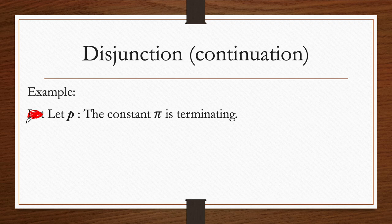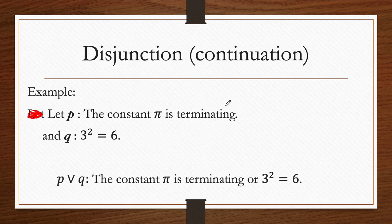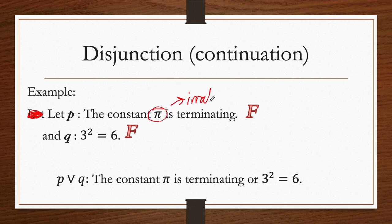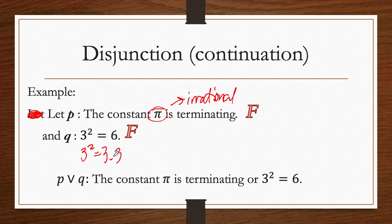For another disjunction example, let P be 'the constant pi is terminating' and Q be '3 squared is 6.' The disjunction reads: 'Pi is terminating or 3 squared is 6.' Both are false — pi is never terminating (it's irrational), and 3 squared equals 9, not 6. So the disjunction is false because both propositions are false.